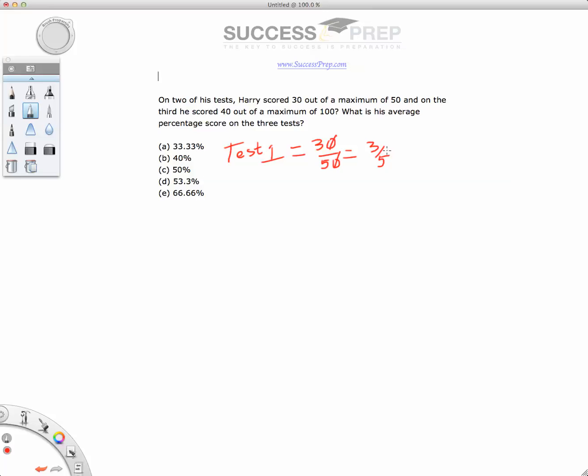But because this question has to do with percentage, the way you change that fraction into percentage form is you go ahead and multiply that by 100. When you do that, this five will cross out this 100, giving you 20 there.